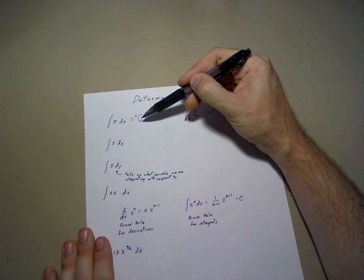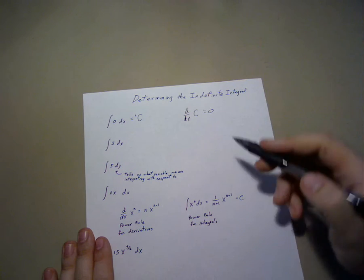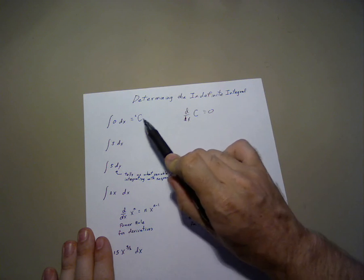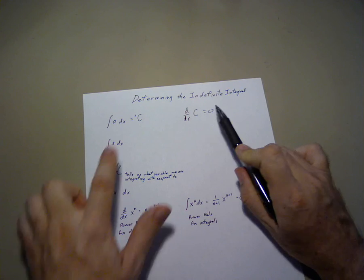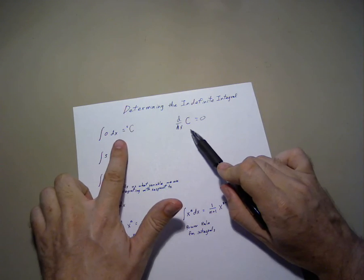Now, c could be a negative number, it could be a positive number, all that it needs to be is a constant. And we can double-check by taking the derivative of c and see that we get 0. These are equivalent statements.